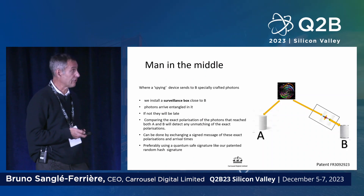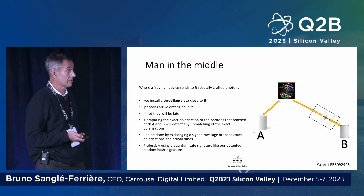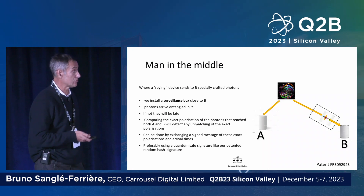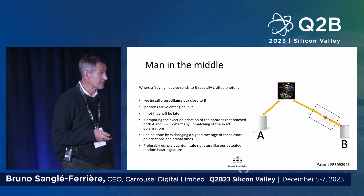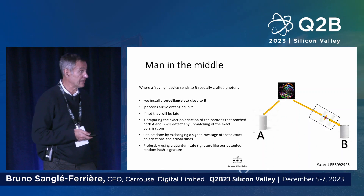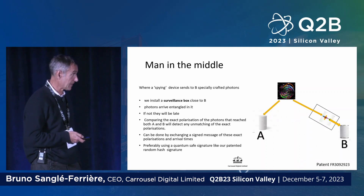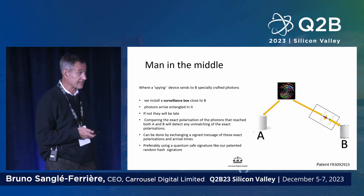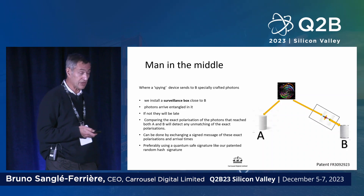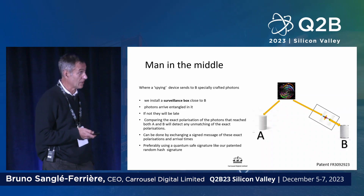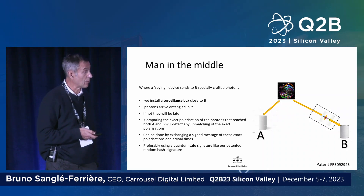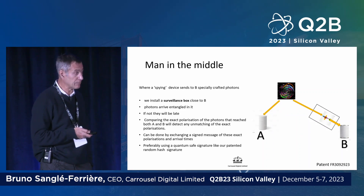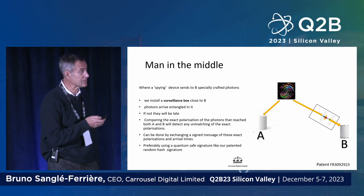We also have to address the man-in-the-middle problem — because you can't follow the line, somebody else using the same system could intercept your message. To guard against that, we have a surveillance box close to B, where we make sure that the photon arrives in B before it has been coded in A, while still being entangled to it.